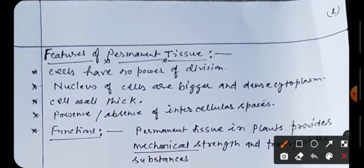First is the feature of permanent tissue and second is the types of meristematic tissue. So what are the various features or the characteristics of permanent tissue?